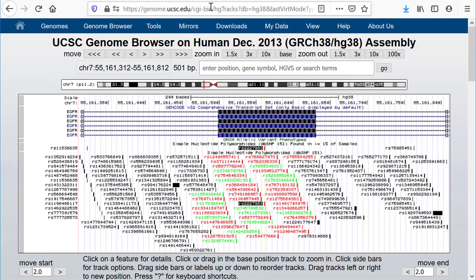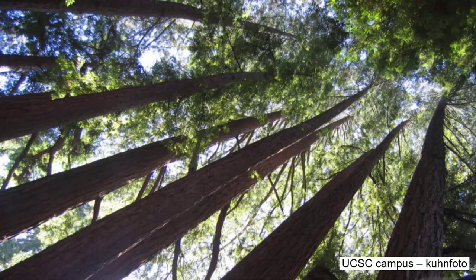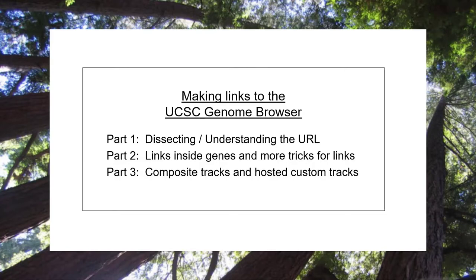This concludes part 1 of the three-part series of videos showing how to make links to the UCSC Genome Browser. Part 2 will show how to navigate to specific locations within genes without knowing their genomic coordinates, how to set highlights, and how to use some other useful features of making customized links to the browser. In part 3, we will discuss how to load composite tracks, how to find obscure configuration parameters, how to access your remotely hosted custom tracks and track hubs, and how to make useful links in your spreadsheets.